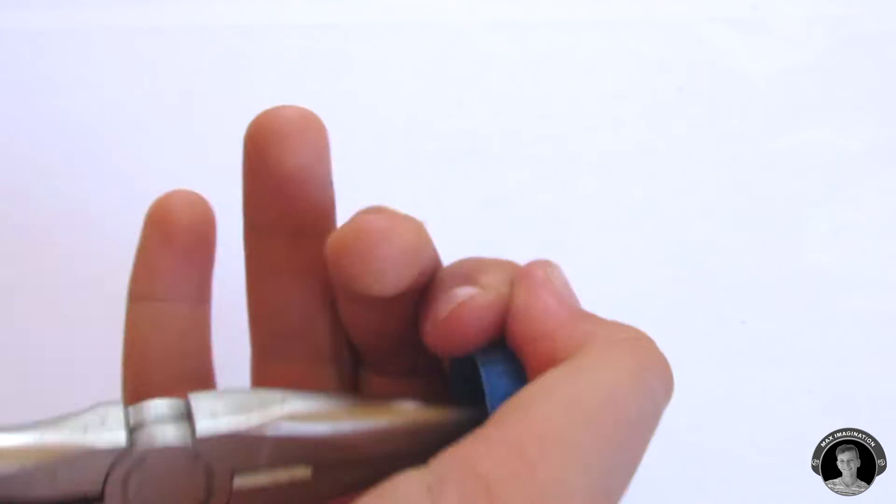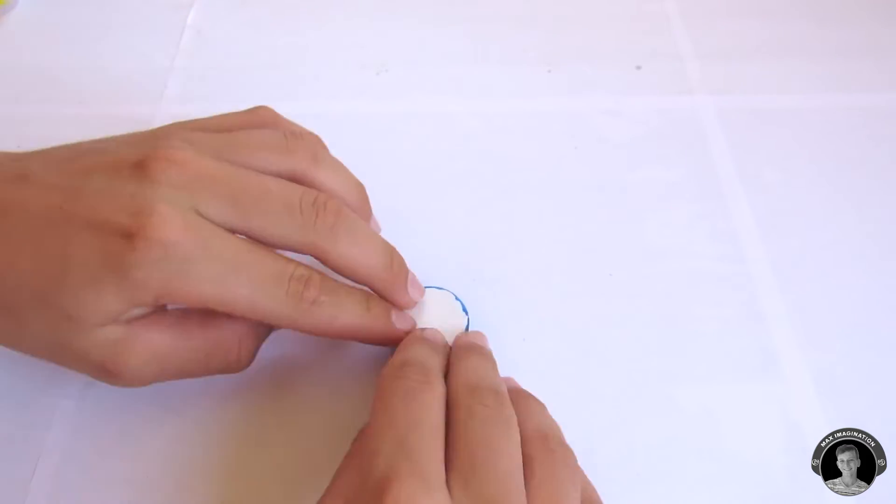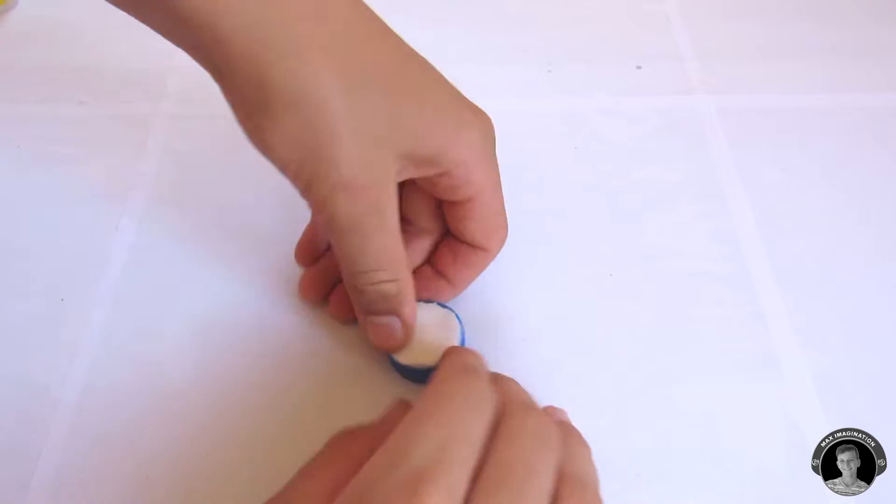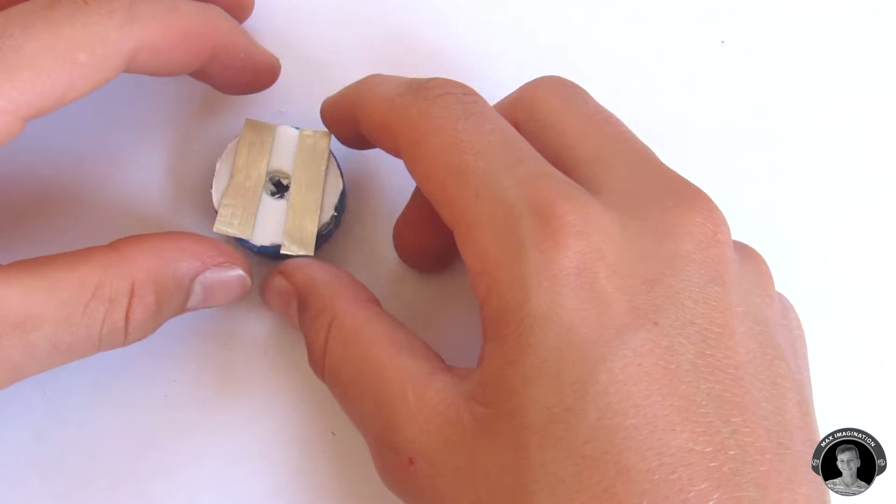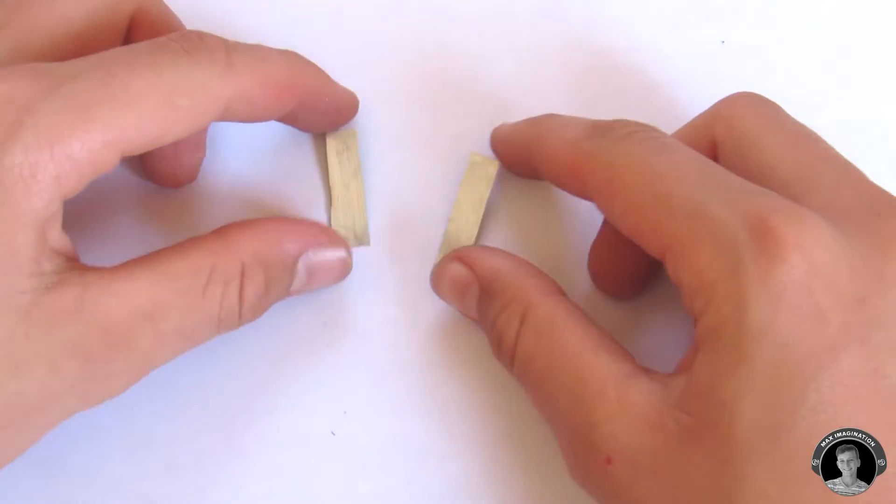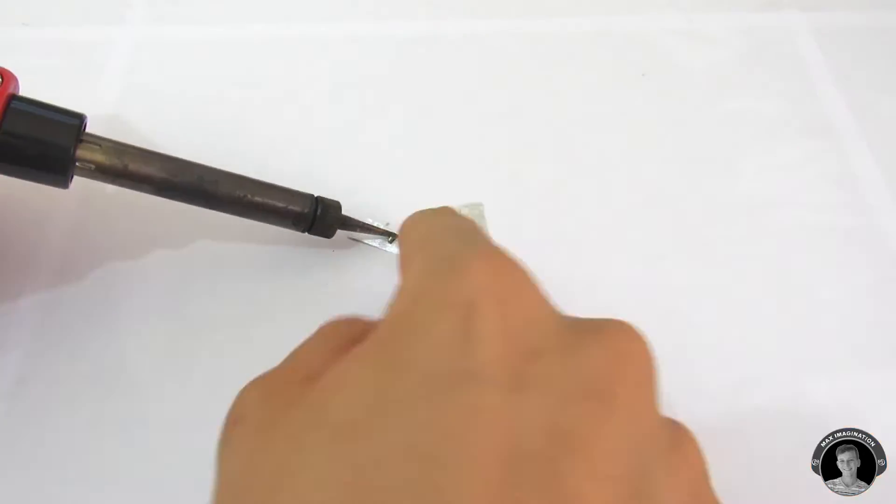Poke a hole in the bottle cap and squeeze in a couple of circles of foam. Take two small pieces of can and solder on a bit of lead with some wires.